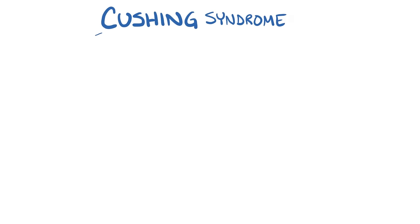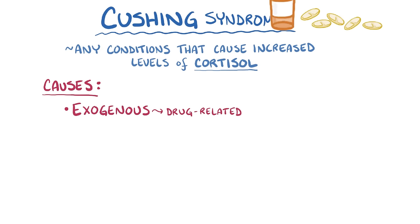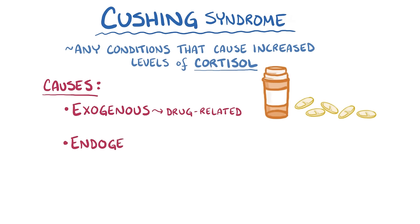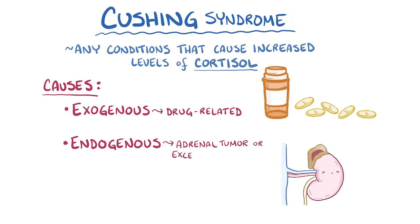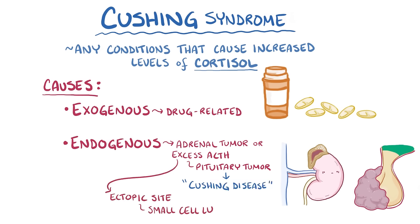As a quick recap: Cushing syndrome is any condition or situation that causes increased levels of cortisol. It can be exogenous, meaning drug related, or endogenous, meaning that it's from an adrenal tumor or excess ACTH from a pituitary adenoma—in which case it's called Cushing disease—or from an ectopic site like small cell lung cancer.